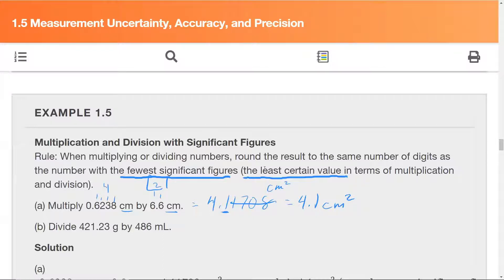For letter B, divide 421.23 grams by 486 milliliters. So remember, when we're adding and subtracting, we have to have the same types of units. But here, this is how we get those new types of units. When we're dividing here, we're dividing mass by volume, so we're actually talking about a density.